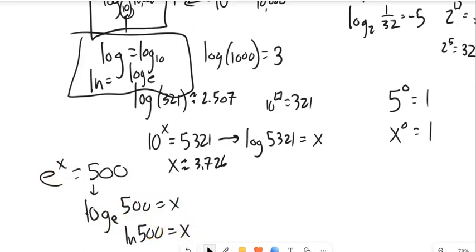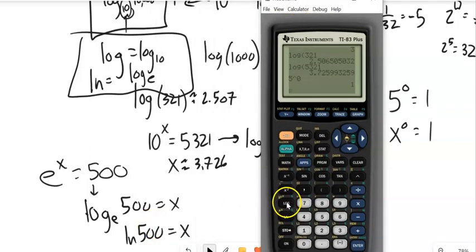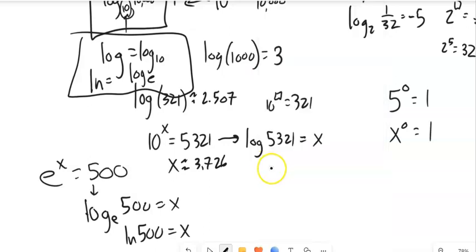And again, we have a button for that. Natural log. So we have a log base 10 button and we have a log base E button. Which hopefully should lead you to believe that those numbers are both reasonably important. It's just to get their own buttons on the calculator. 6.215 about.